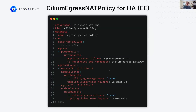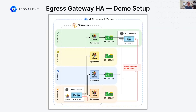I have a little demo to show you. This is the NAT policy I will use, with the destination CIDR here. When the pod specified here — the pod has a label app.kubernetes.io/name equals egress-gateway-monitor and this namespace — is trying to reach this destination CIDR, it should go through one of these nodes. There are actually four nodes but it takes too much space on screen. We've got some egress IPs here and the availability zones in which they are located on Amazon Web Services.